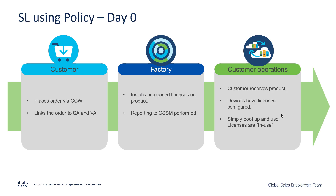So let's say you place an order using the CCW tool. How does smart licensing using policy play a role? You are going to place an order on the CCW. A mandatory step is you need to specify your smart account as well as your virtual account. The factory, when it receives the order, will install the purchased licenses on the product and perform the first reporting to the CSSM before shipping the product. So the end customer, when they receive the product, simply has to boot up the product and stack it in the network. They will be able to start using it immediately from day zero without having to perform any specific operation with respect to licensing.